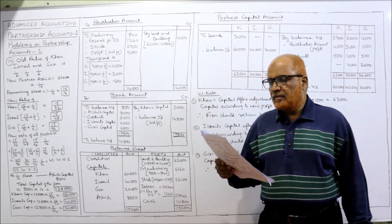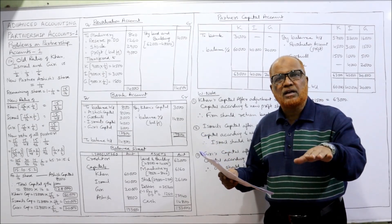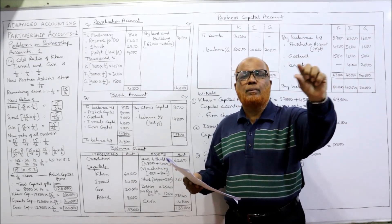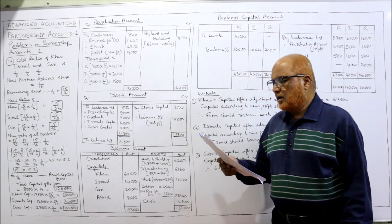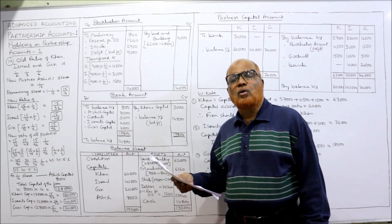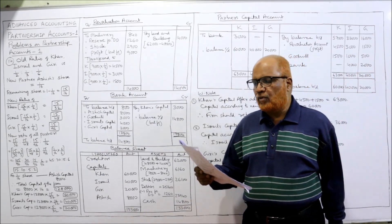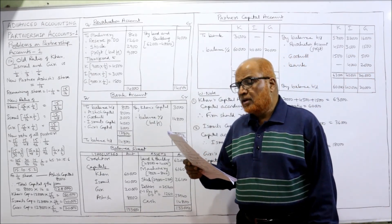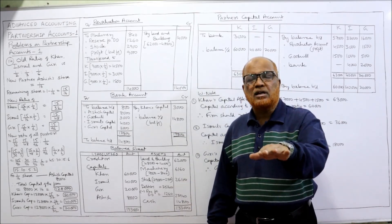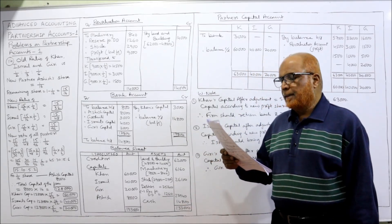The machinery is to be depreciated by 12% — the value of machinery should be decreased, so revaluation account is debited and machinery account is credited. A reserve of 5% is to be created for doubtful debts — entry: revaluation account debit, reserve for doubtful debts credit. Stock is to be depreciated by 10% — revaluation account debit, stock account credit.